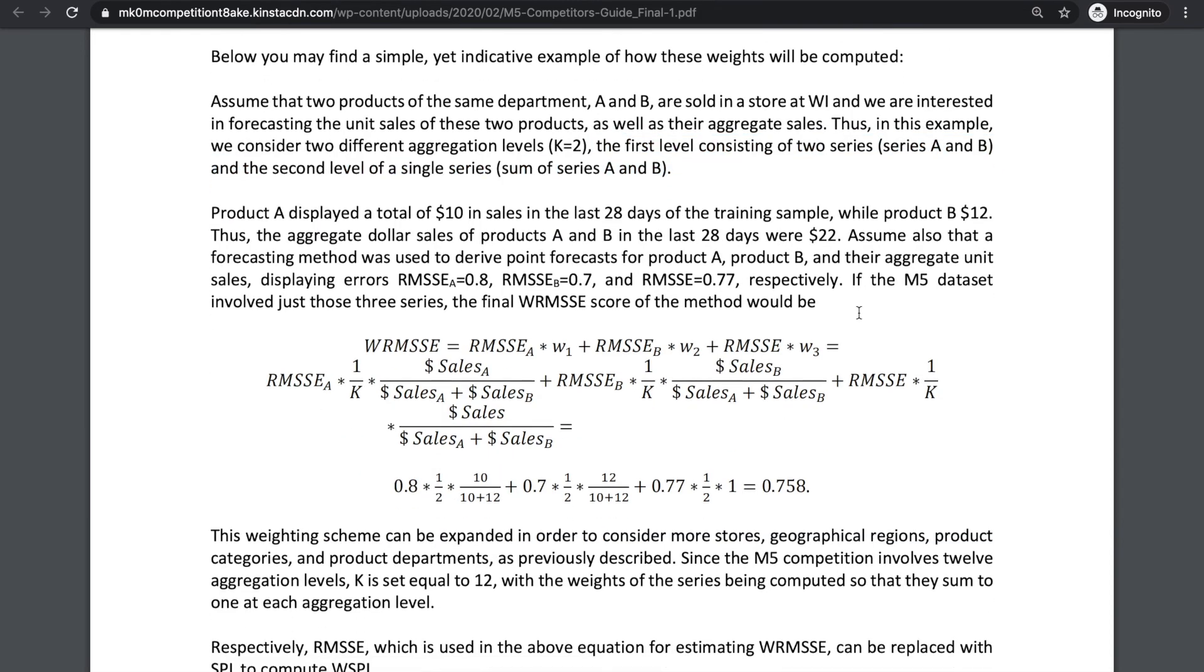First, we want the weight for each level in the hierarchy to sum to one. So the weight for SA is given by dollar sales of A divided by total dollar sales in that level, which is dollar sales of A plus dollar sales of B. The same logic applies to series SB.